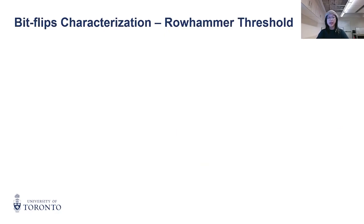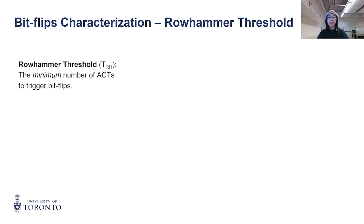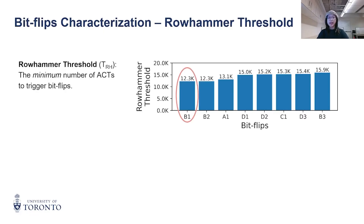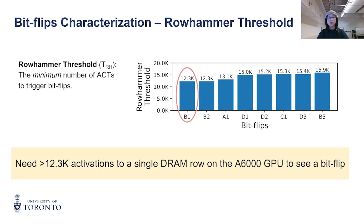Next, we characterized the row hammer threshold. Earlier in challenge two, we aimed for maximum hammer intensity. But here we ask: what is the minimum number of activations needed to trigger bit flips on GDDR6? We found that it takes at least 12.3K activations to a single DRAM row before we observe a bit flip, while other bit flips may require up to 16K activations.